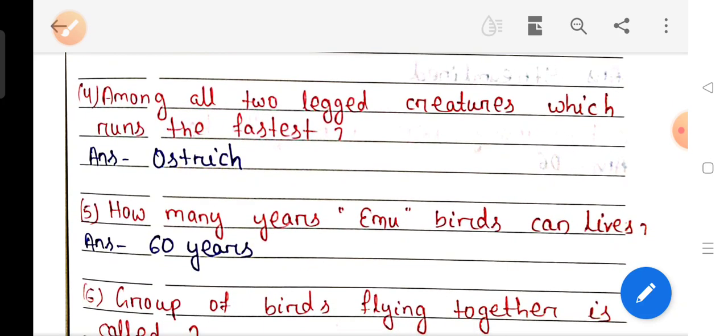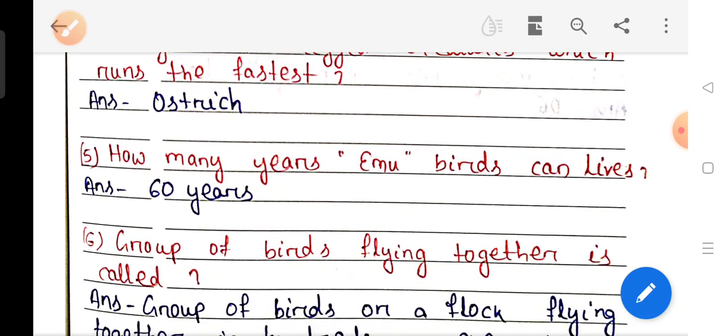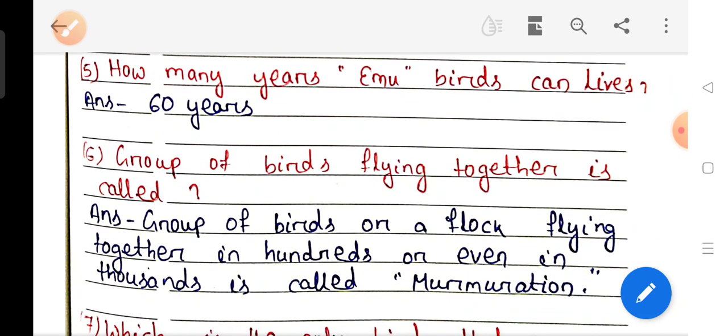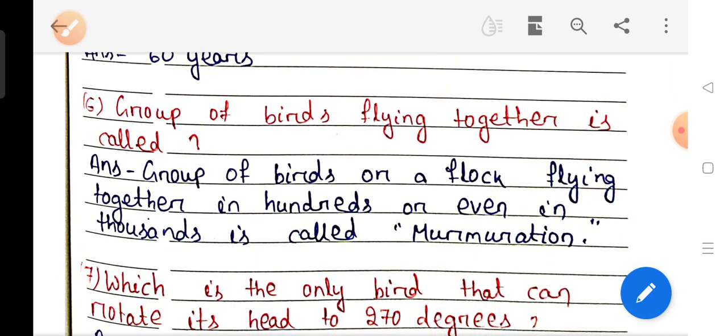Question number 5: How many years can vampire bats live? Answer 60 years. Question number 6: Group of birds flying together is called what? Answer Murmuration.